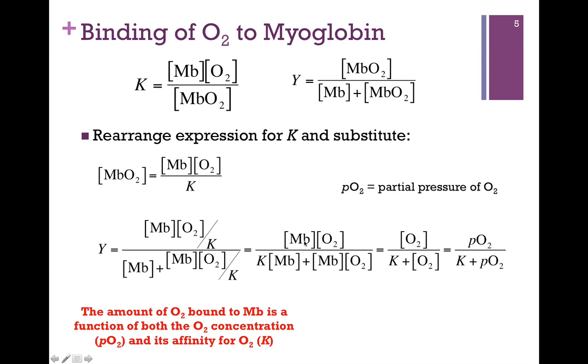We can simplify that algebraically. And then we notice that we have the concentration of myoglobin in all three of our terms, and so we can cancel that out. And now we've simplified our expression. So the fractional saturation is a function of oxygen concentration and that equilibrium constant.